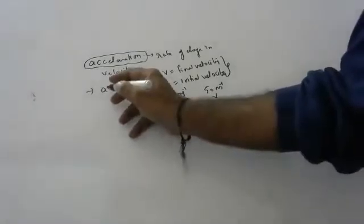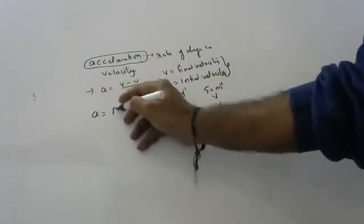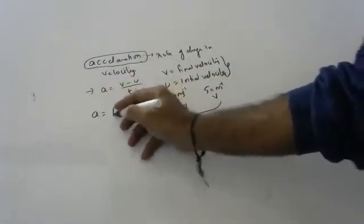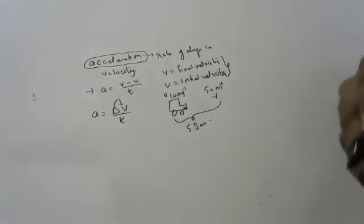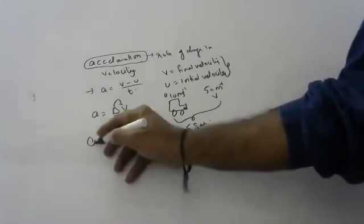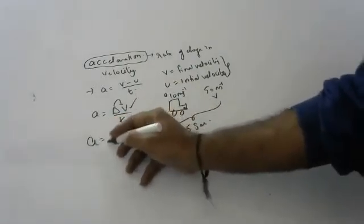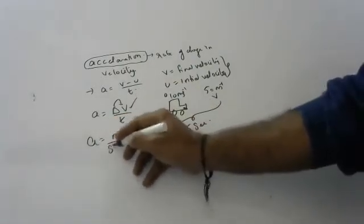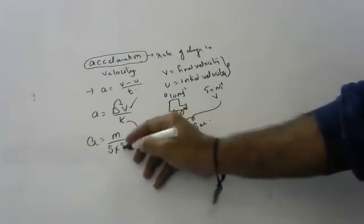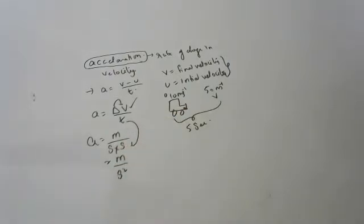So acceleration is delta V by T — delta means change. The units of velocity are meters per second, so acceleration is meters per second squared.